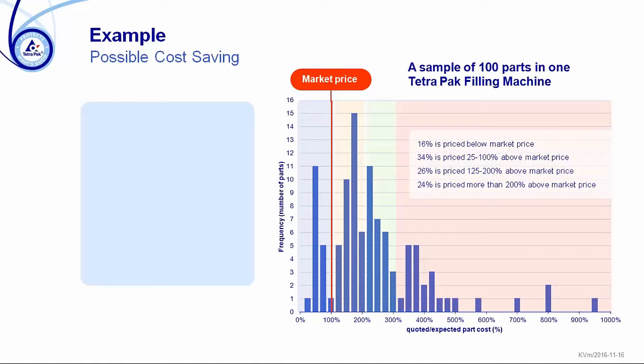With these findings, we went back to the supplier and just told them we had scrutinized those parts and there was something strange — could they do something? Only by saying that, without addressing how many parts or how large the differences were, they lowered the price by 16% on average. That was even without negotiating anything in detail. There are things we can do on existing machines too. But it's important to understand that what we get from aPriori or from our specialists is still an estimate — it's not fact. The results should be used in discussions with suppliers to understand the differences.